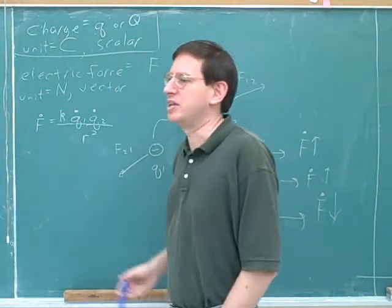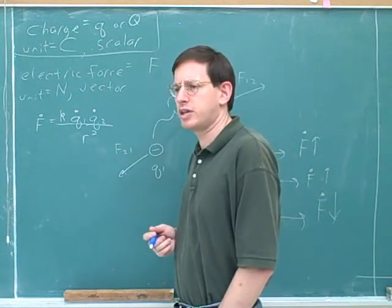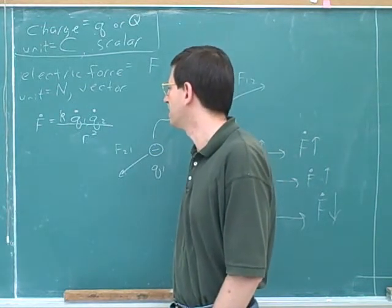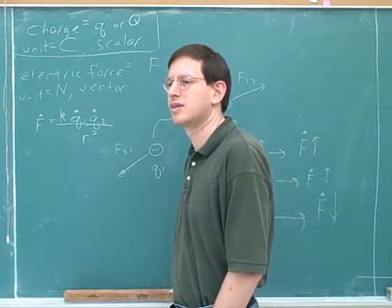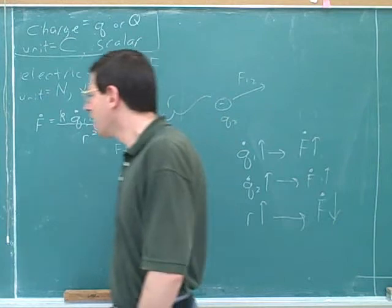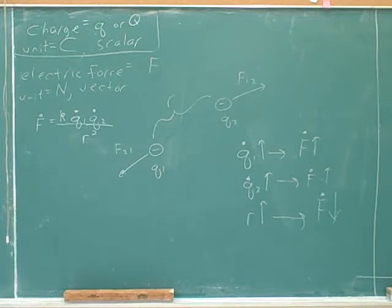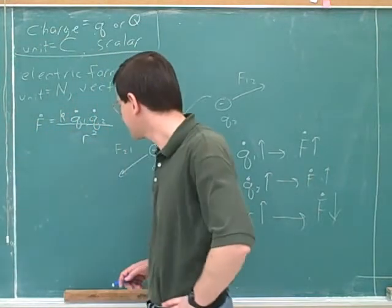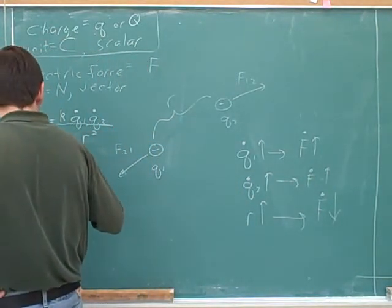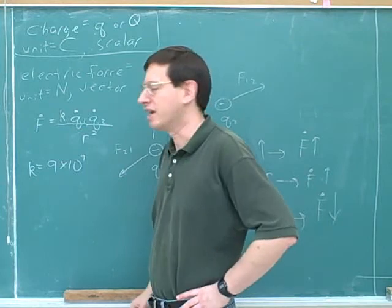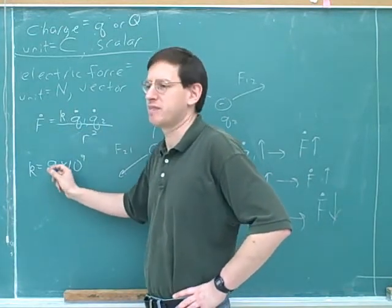This is Coulomb's constant. When you work on the homework you'll need to use this constant a lot. You need to know where to find it in the textbook — it's 9 times 10 to the 9th (more precisely 8.99 times 10 to the 9th, but we round it off). Note that for some reason Coulomb's constant is left out of the inside front cover of the textbook, so you may want to write it in there so you can find it easily.